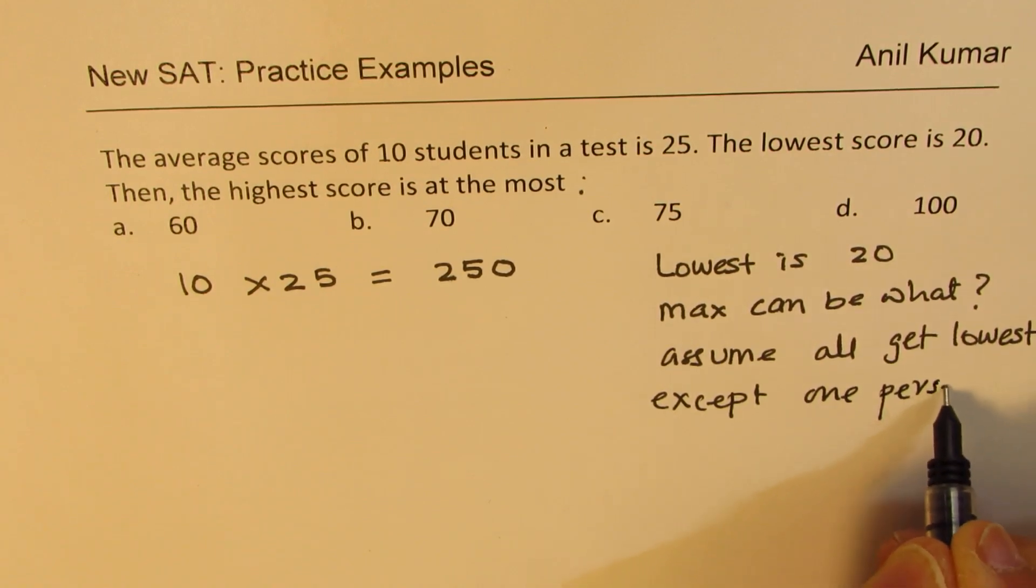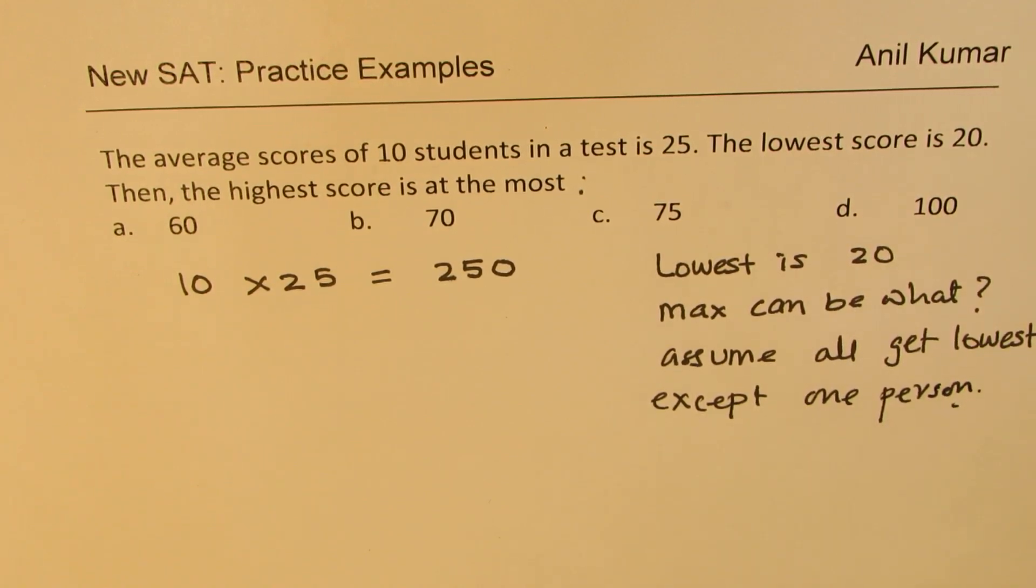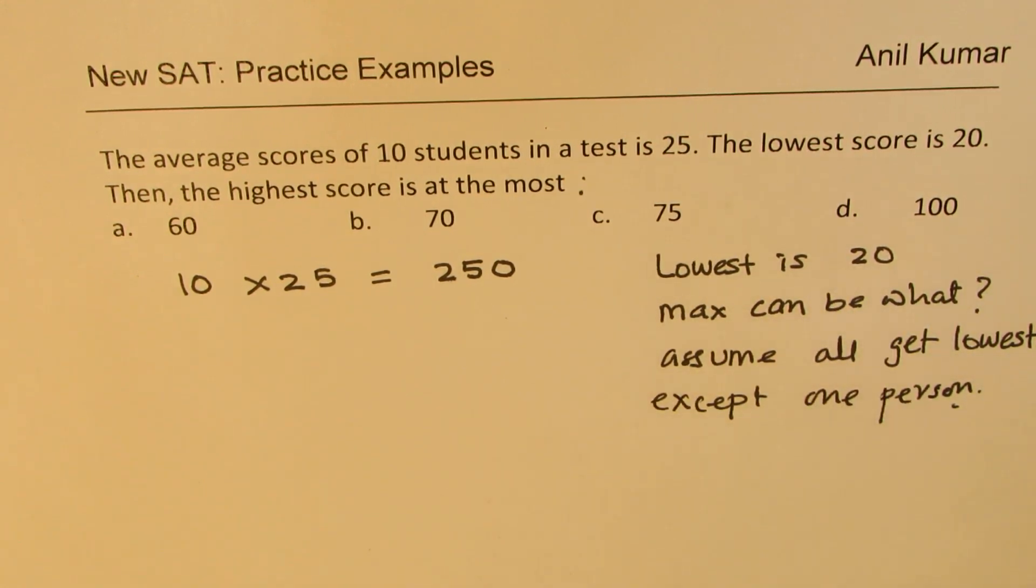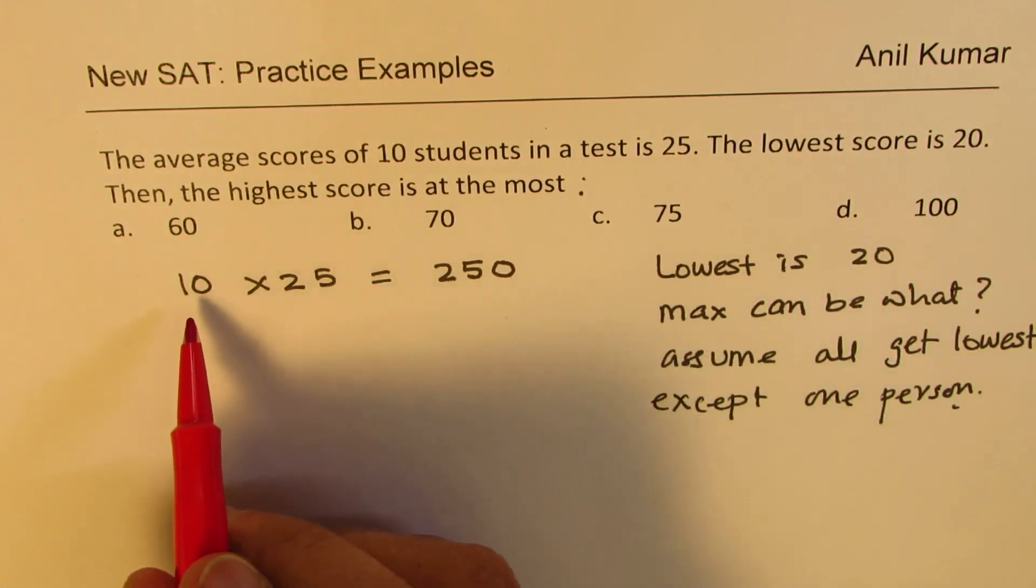Then only you get the highest score. Does it make sense? So the lowest is 20. So what we will assume here is that everyone except one person gets the lowest score.